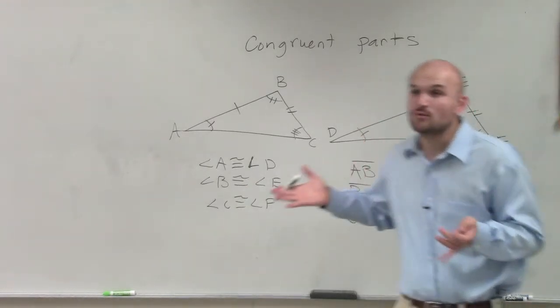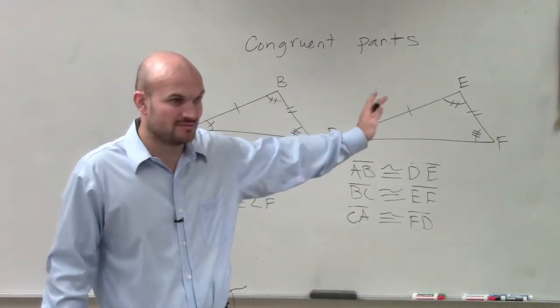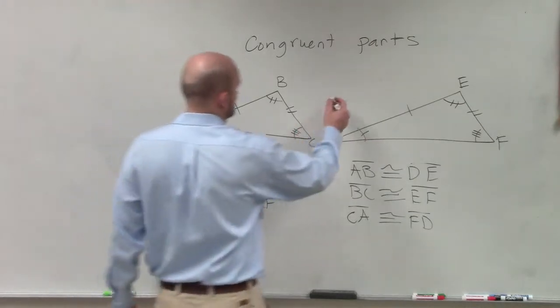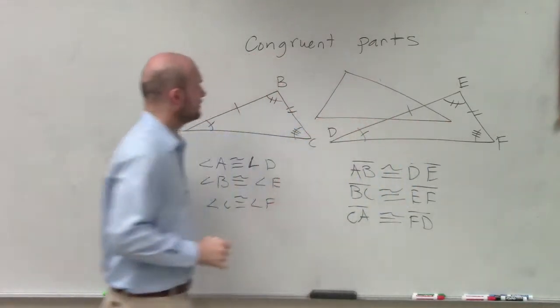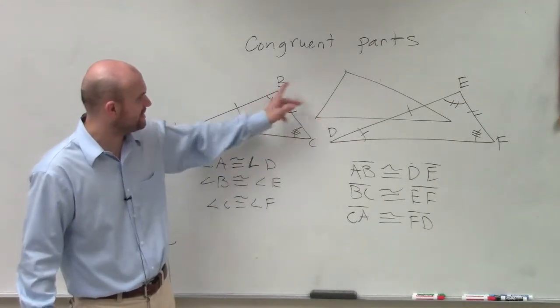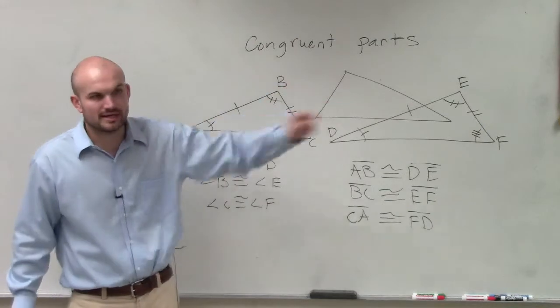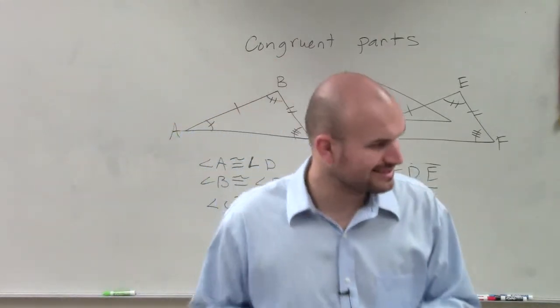Because sometimes, we're not just going to have the triangles look like this, sometimes they're going to be rotated all about, right? I might reverse this. I might have it look like this. And then you guys need to know that C still goes with that point, B goes over there, and C would relate over there. OK? So that is a brief, just a little demonstration of your congruent parts.